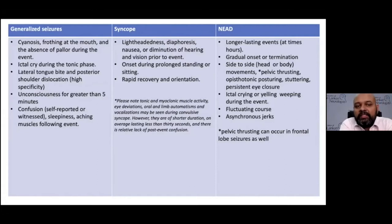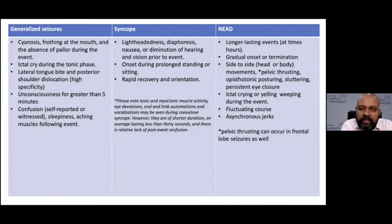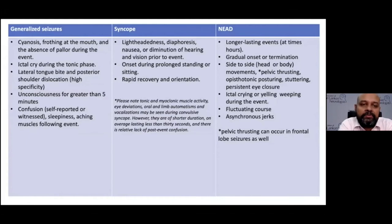Predictors of true generalized seizures include cyanosis, an ictal cry associated with the tonic phase, a lateral tongue bite — a very high predictor of a true seizure — and posterior dislocation. Loss of awareness and confusion lasting more than five minutes with a gradual recovery is more in favor of a generalized seizure. Post-ictal sleepiness, aching muscles, and headaches also predict a true generalized seizure.